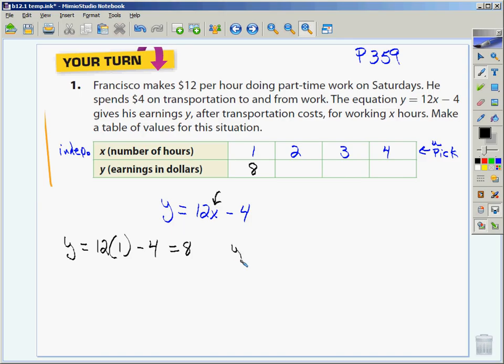Then, we're going to do y equals 12 times 2 minus 4. 12 times 2 is 24. Minus 4 is 20. Then we're going to do y equals 12 times 3 minus 4. 36 minus 4 is 32. And when I go to do the next one, y equals 12 times 4 minus 4. 12 times 4 is 48. Minus 4 is 44.